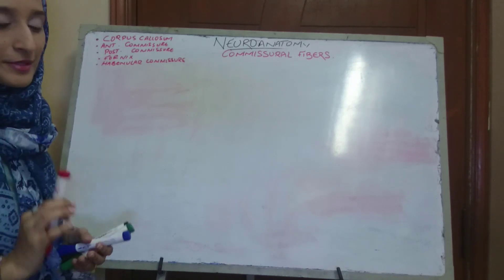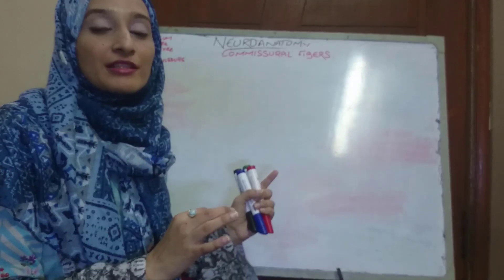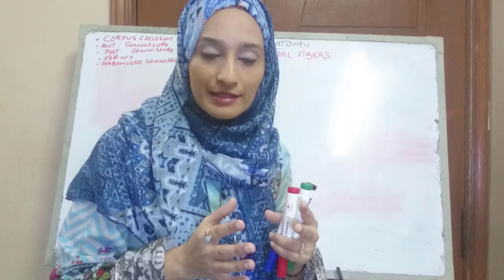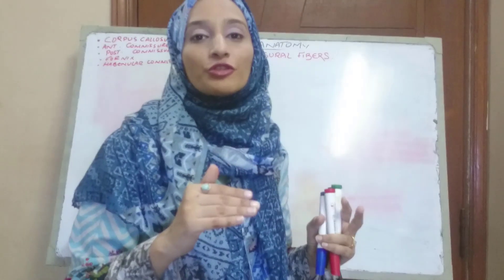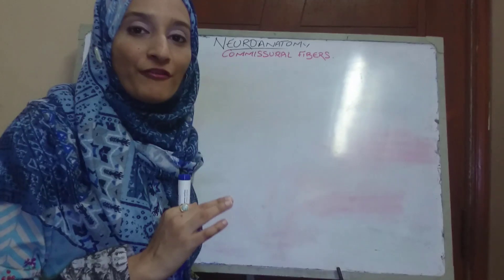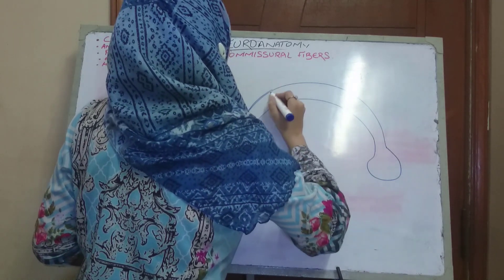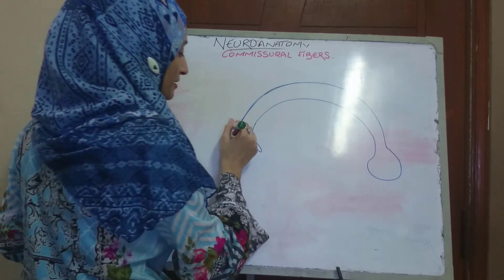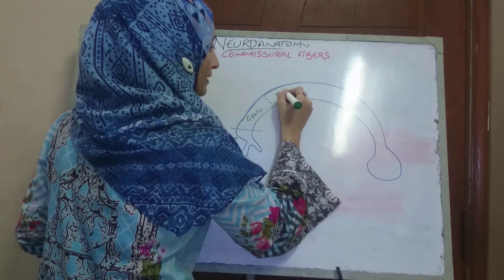The corpus callosum is the largest white fiber, the largest commissural nerve bundle. It connects the two cerebral hemispheres. It is a C-shaped nerve bundle present below the cortex, along the longitudinal fissure, connecting the two halves together. It is divided into four parts from anterior to posterior: the rostrum, the genu, the body, and the splenium — the posterior and most dilated part.